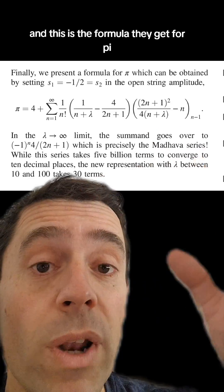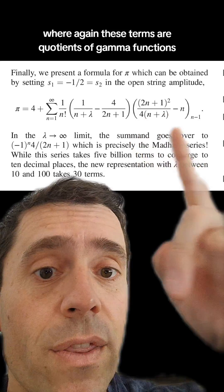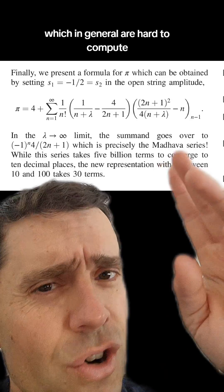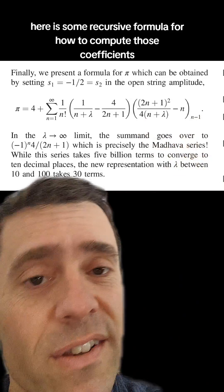that quotient of gamma functions is a polynomial in the constants inside it. And this is the formula they get for pi, where these terms are quotients of gamma functions, which in general are hard to compute.